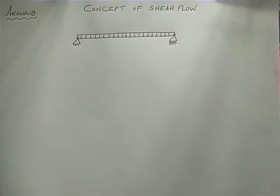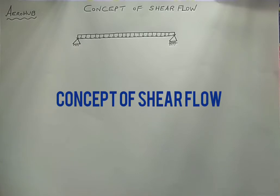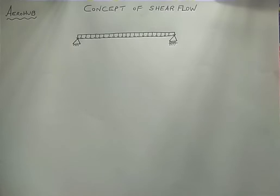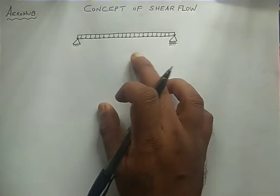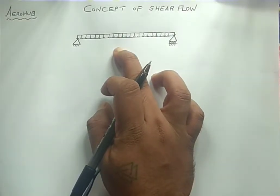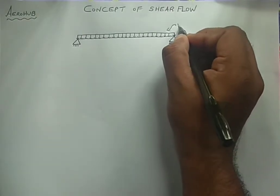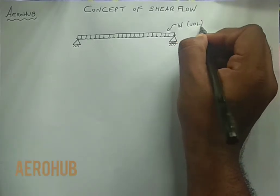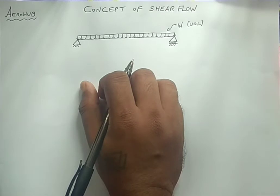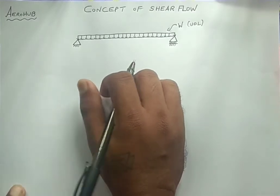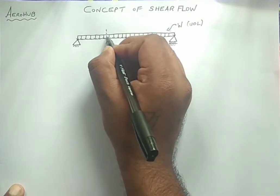Hello everyone, welcome to AeroHub and welcome back to the series of lectures in airframe structural analysis. This is lecture number 13 of this series. In the last lecture we discussed the relationship between shear force, bending moment, and loading conditions. In this lecture we will discuss one of the important concepts in airframe design — that is the shear flow. We have a simply supported beam loaded with a uniformly distributed load (UDL) of intensity w, and we take a small element from this beam.